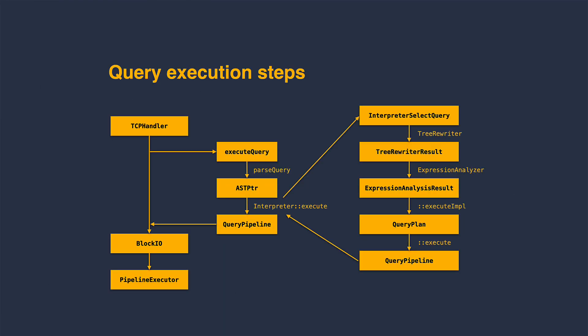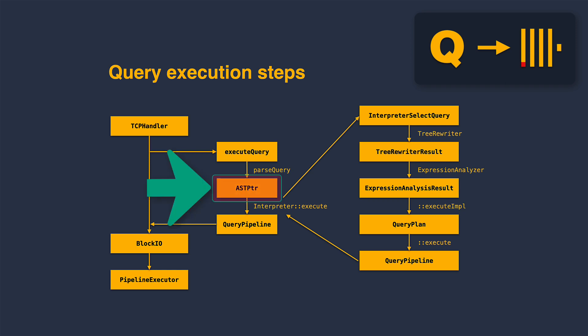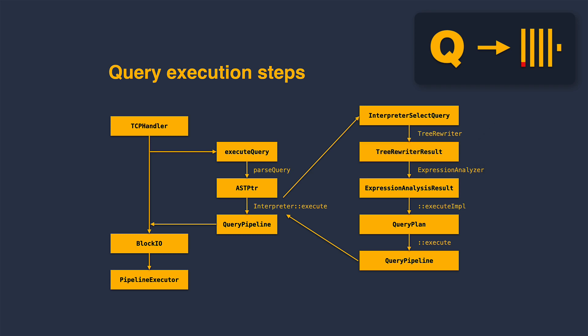This diagram shows the execution steps and the main associated C++ classes, structures, and functions that are responsible in ClickHouse for transforming and executing a query sent to a ClickHouse server. When you send a SQL query to ClickHouse, it parses the query text into an abstract syntax tree, which gets rewritten into an optimized and normalized query version, from which ClickHouse creates a generic query plan. Finally, a concrete query pipeline is built from the query plan and then executed.